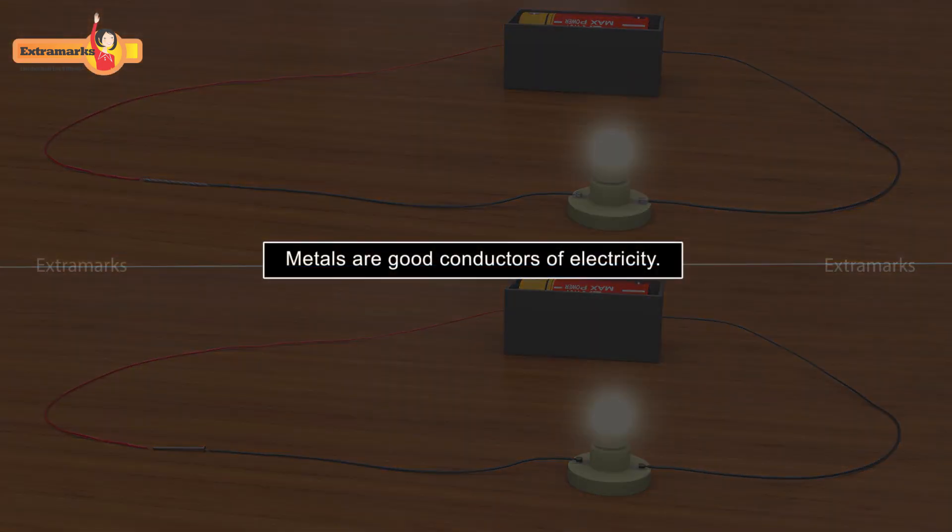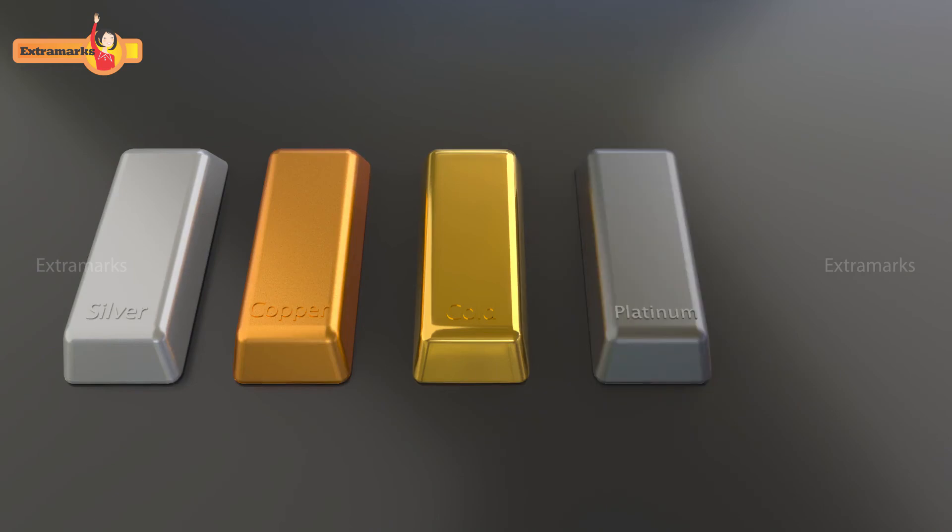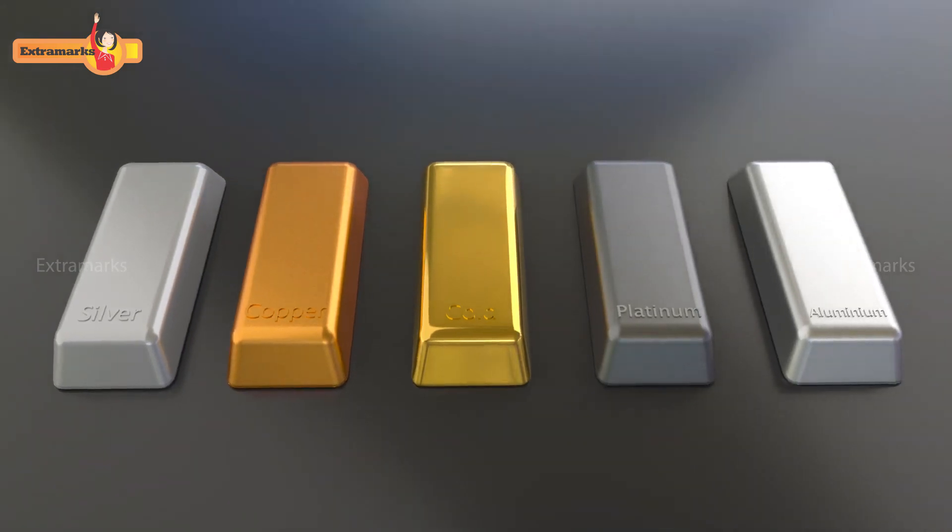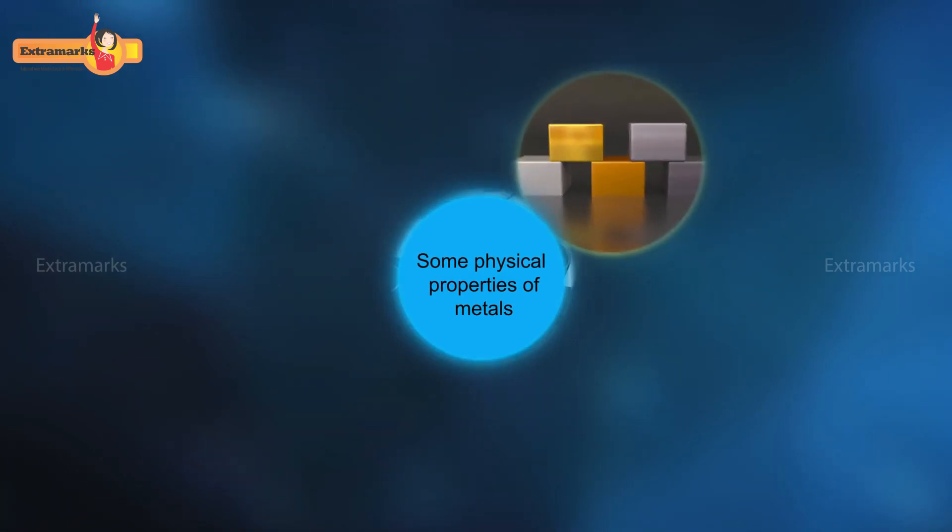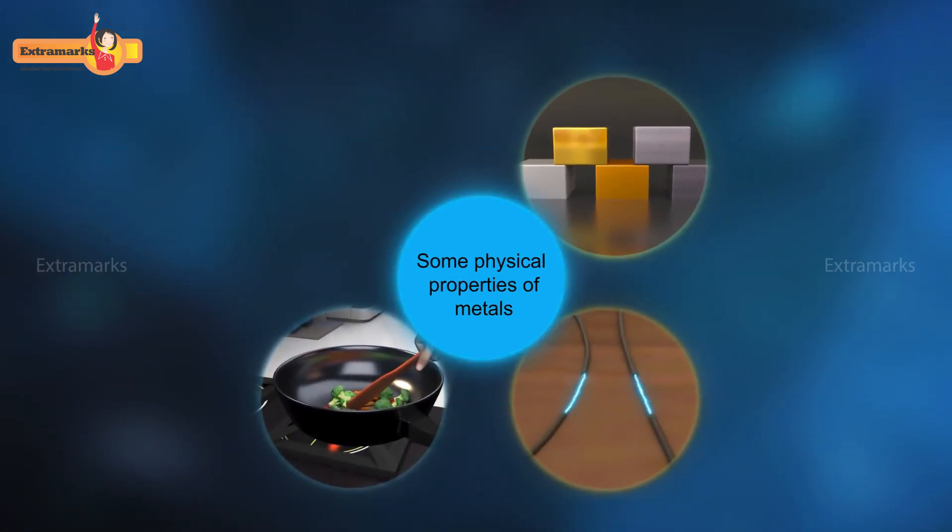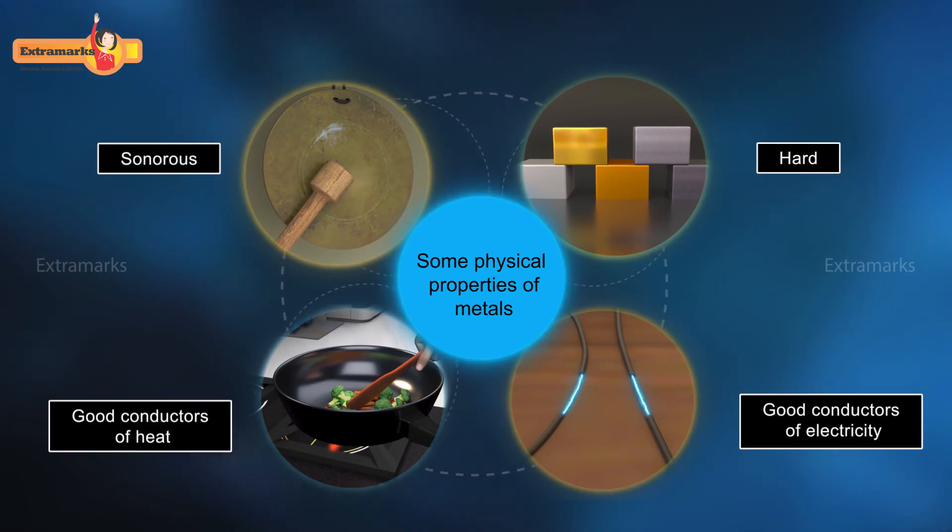It means metals are good conductors of electricity. Silver, copper, gold, platinum, and aluminum have high electrical conductivity. After studying properties such as hardness, thermal conductivity, electrical conductivity, and sonority, we can say that metals are hard, sonorous, and good conductors of heat and electricity.